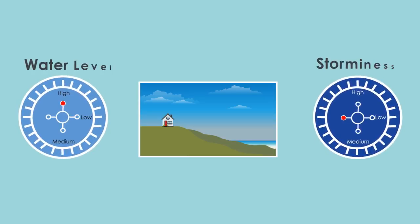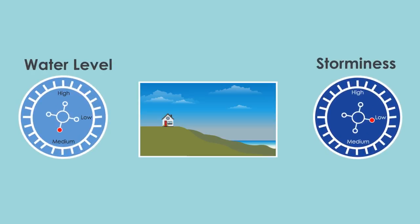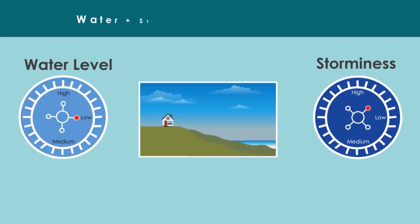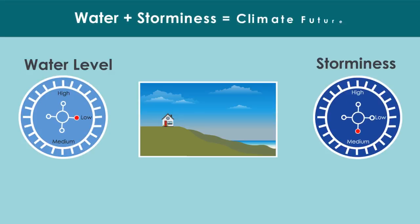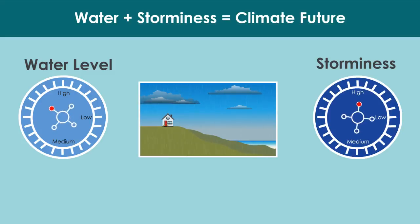One way to account for uncertainties is to engage in scenario-based planning. Under this approach, different combinations of water levels and storm events can be combined to anticipate potential climate futures. This information can be used to map coastal areas potentially at risk from waves and flooding.